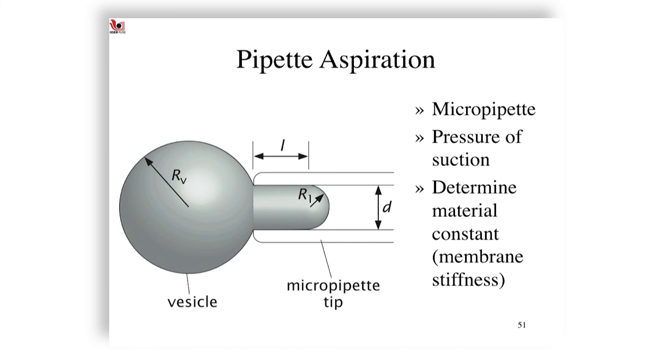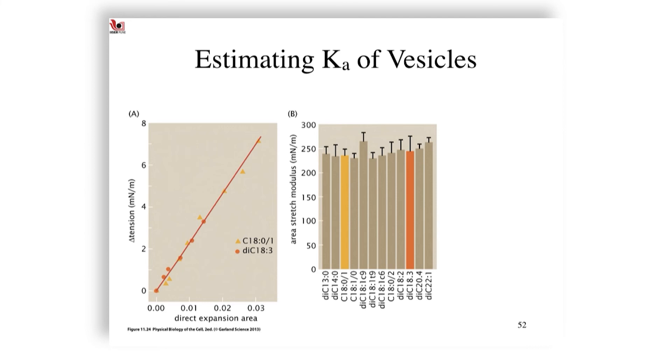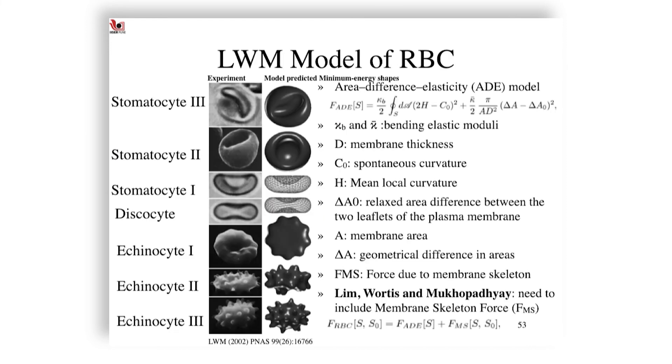The pipette aspiration assay exerts a pressure, induces a tube of length L, and the vesicle radius changes along with the tube length radius. It turns out that as the direct expansion area increases, the tension also increases. In other words, increasing tension leads to increased direct expansion area, and the slope of that allows us to estimate the area deformation modulus. These values, area stretch moduli of different vesicles made up of different lipids, are demonstrating here that it is in the range of 250 millinewtons per meter.